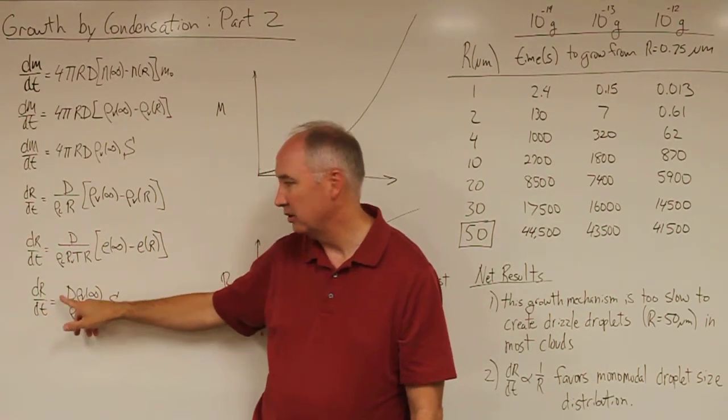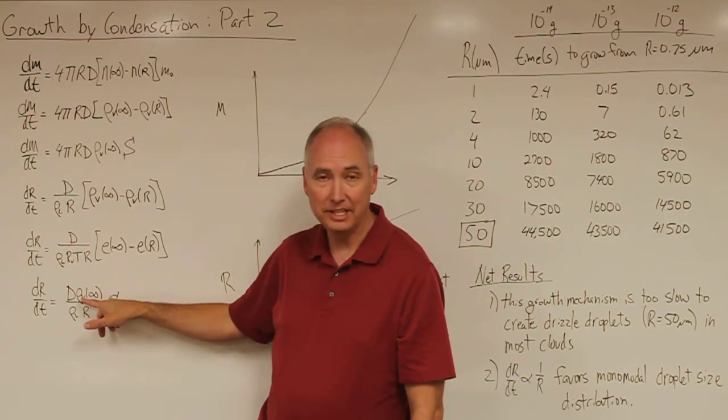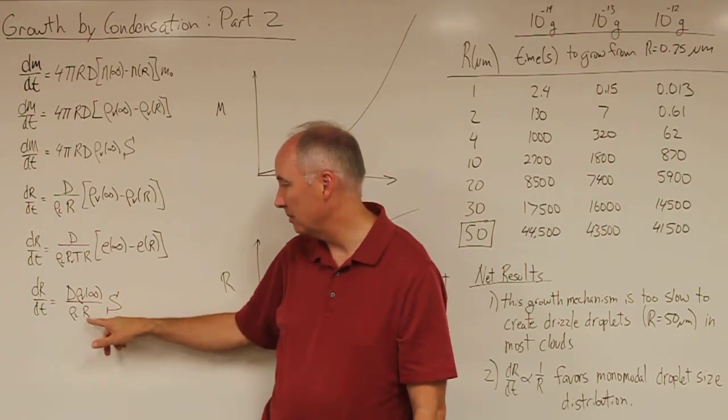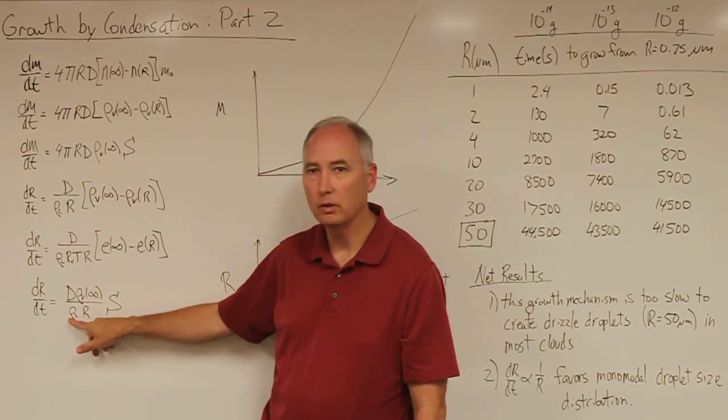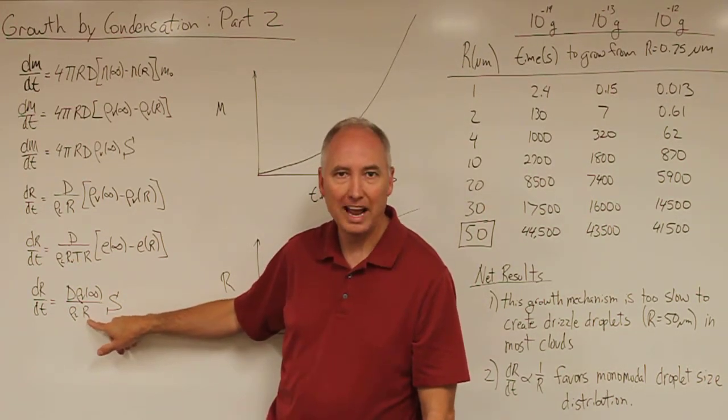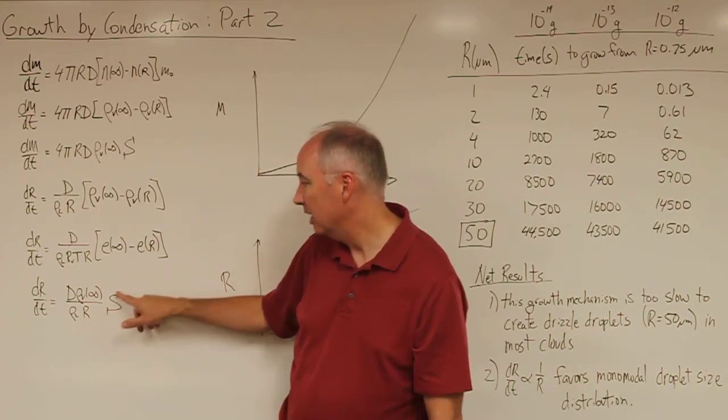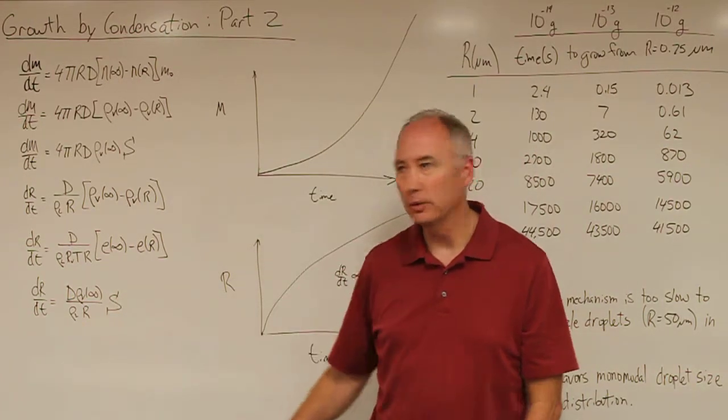dR/dt is equal to the diffusivity constant times the density of the water vapor far from the droplet divided by the density of liquid water divided by the radius of the droplet. I left this R out in the equation at the end of the last lecture, multiplied by the supersaturation.